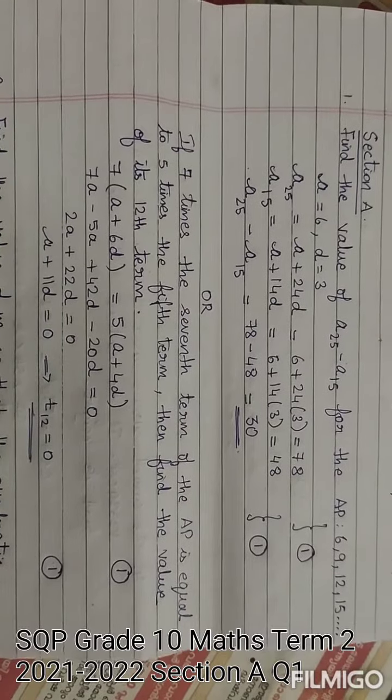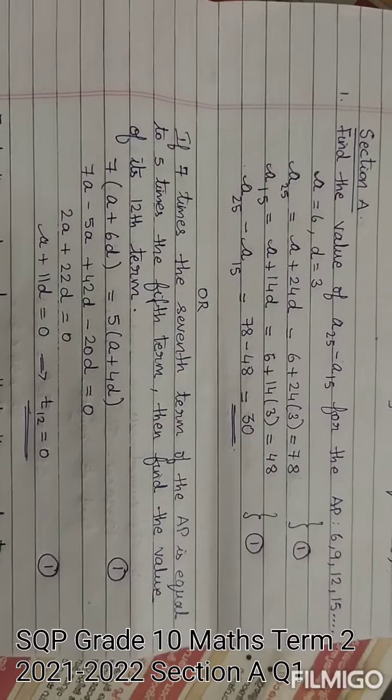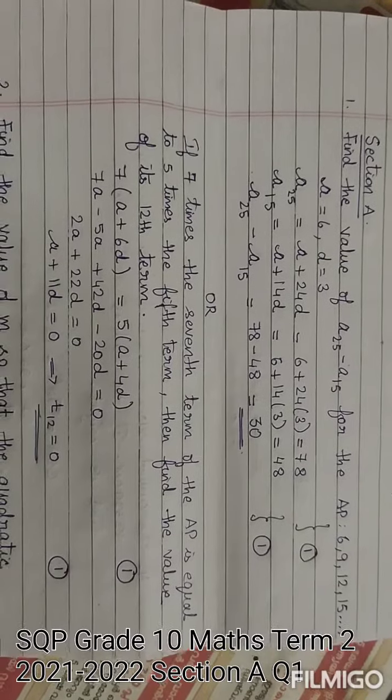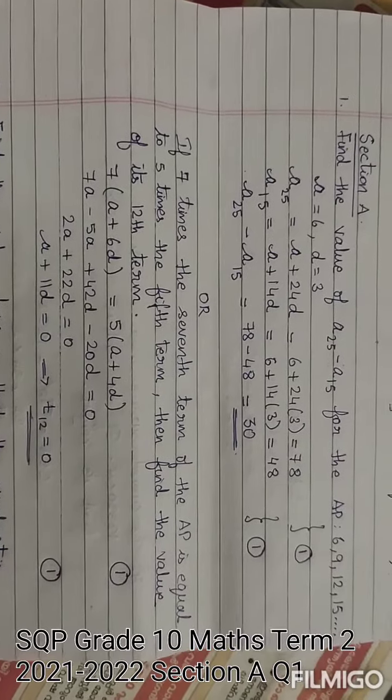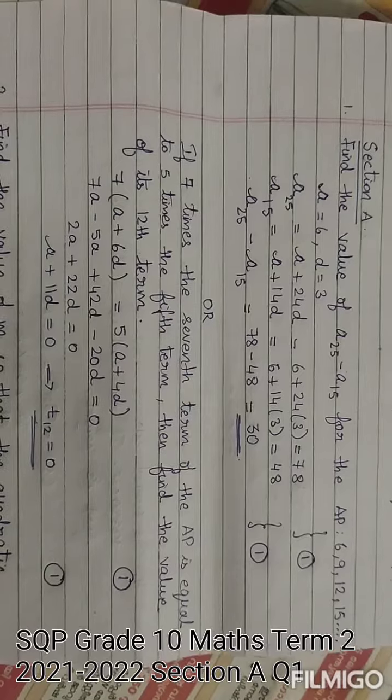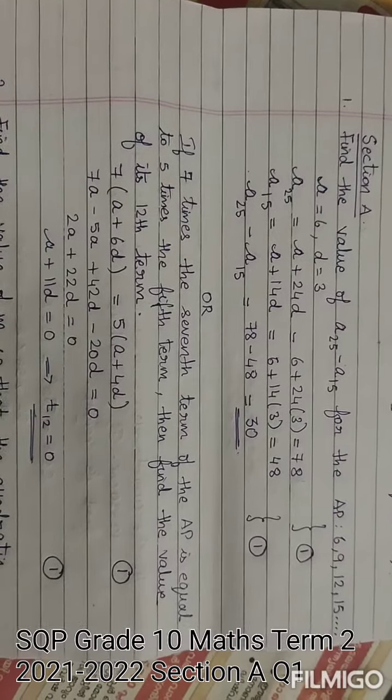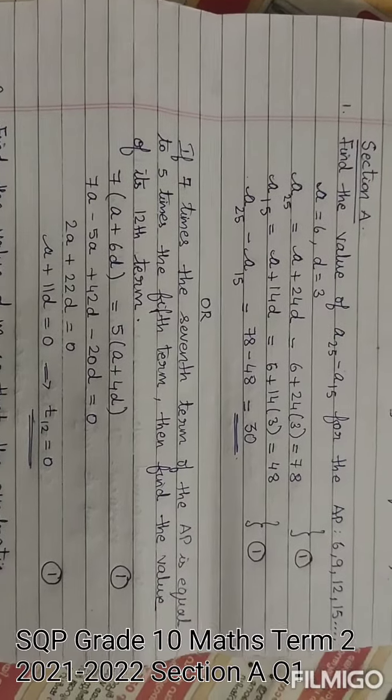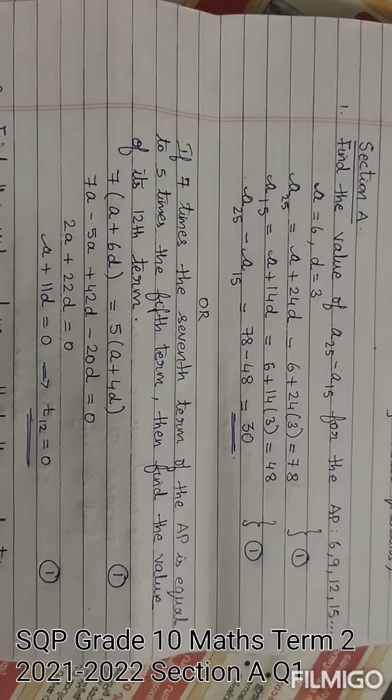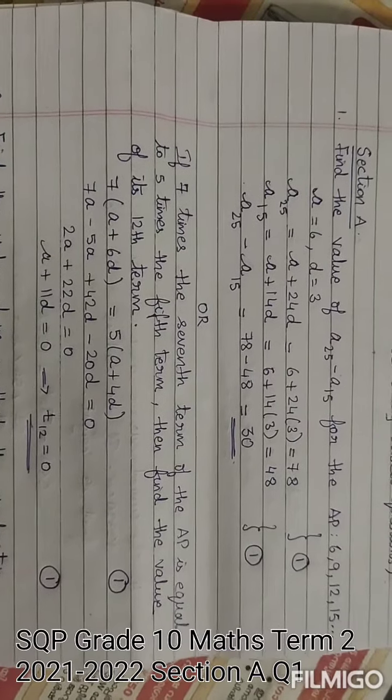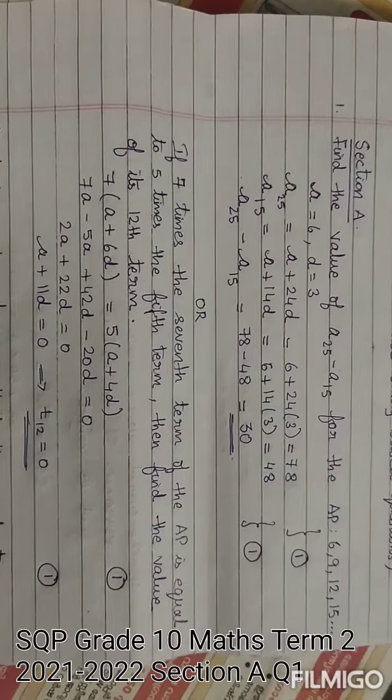The 7th term is a plus 6d and 5th term is a plus 4d. So 7 times, 7 into a plus 6d equals 5 times 5th term, that is 5 into a plus 4d. Opening the brackets: 7a minus 5a plus 42d minus 20d equals 0.